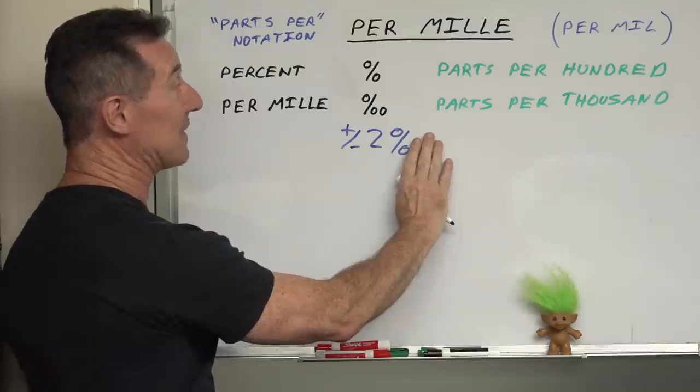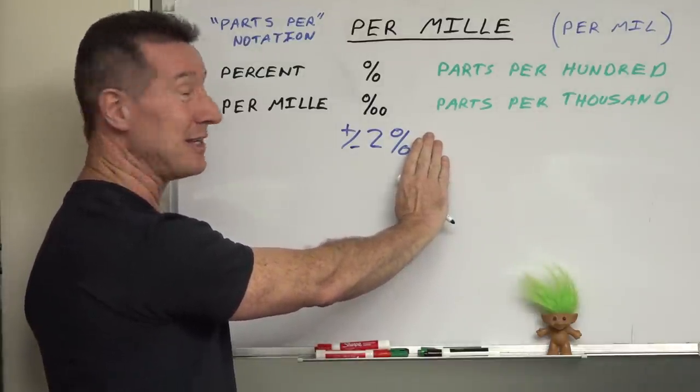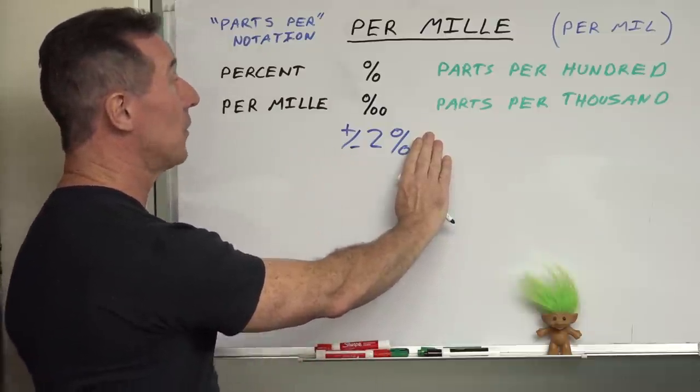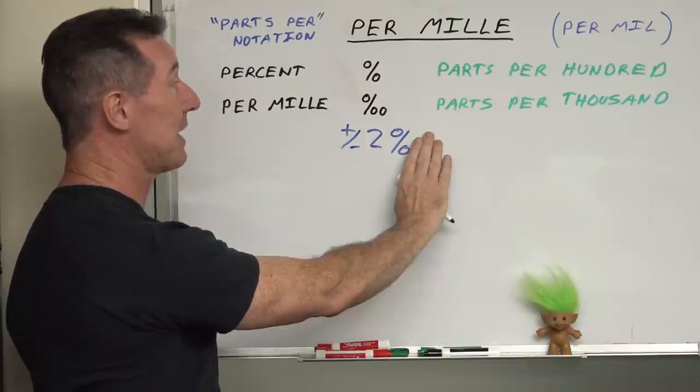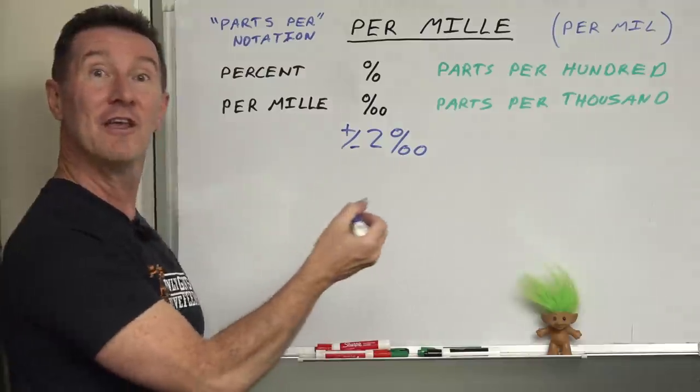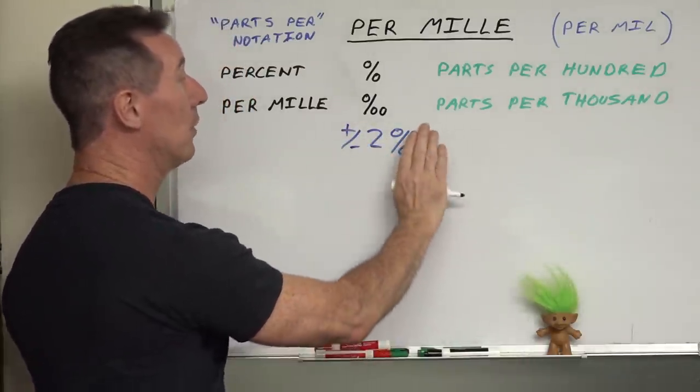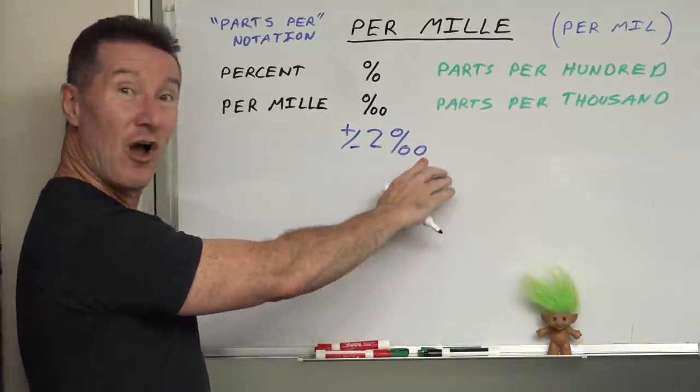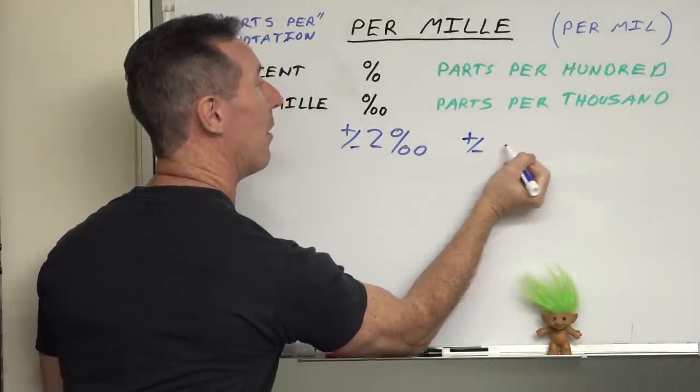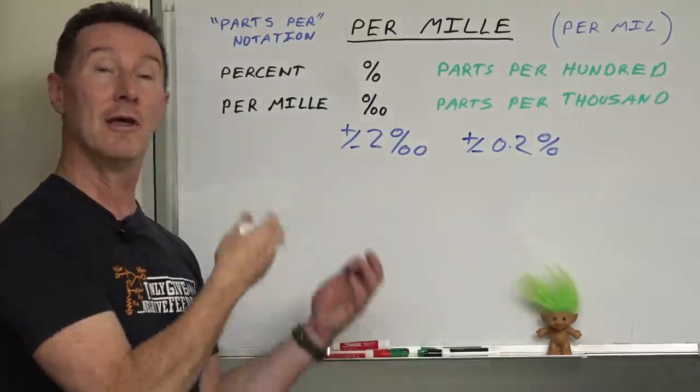And instead of it being, if this extra little O wasn't there - it is an O it's not actually a zero, it's like an actual O, it's a circle - it's plus minus two, it's not plus minus two percent but instead of parts per hundred, parts per thousand, we have to shift the decimal place one part here, so plus minus two percent. But when you add that extra O in there, it's per mil, so it's actually plus minus naught point two percent, if you want to convert it back to percent.